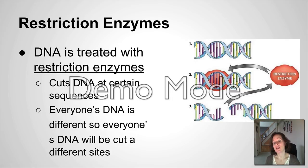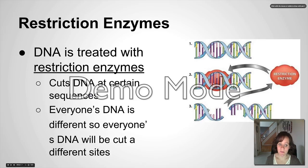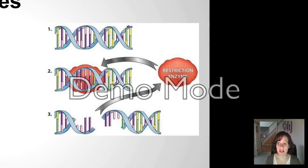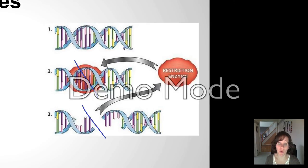After you have a lot more DNA to work with, you now need to cut it using restriction enzymes. Restriction enzymes cut DNA at certain sequences. Everyone's DNA is different, so everyone's DNA is going to be cut at different sites, and therefore you're going to get a different product. Here's your DNA double helix — the restriction enzyme comes up to it and cuts it. That restriction enzyme actually originates from bacteria, which have these in their cells as a defense mechanism to cut up intruding DNA. After cutting, you now have two pieces of DNA where before there was only one.